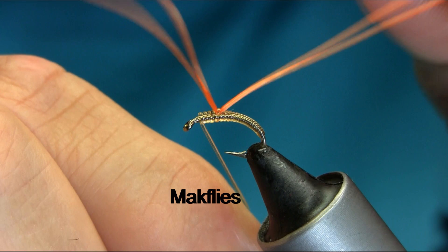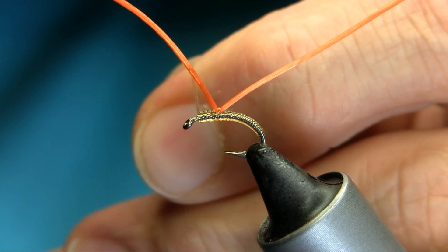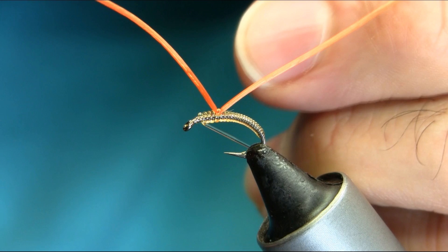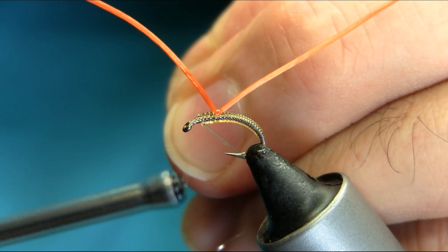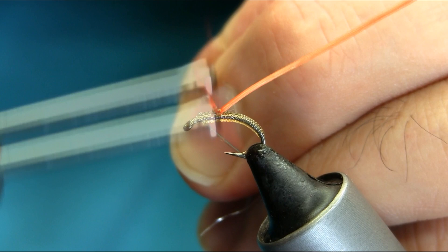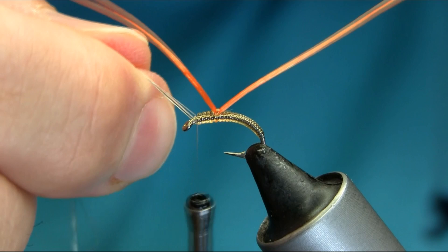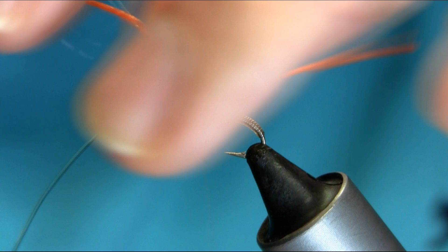Now here I'm going to catch with the clear mono thread. Because it's a transparent pattern, I don't want any normal thread in here. Once you get that on, catch this gently. Once you secure it properly, use a few turns to completely secure and then take the extra ones off.